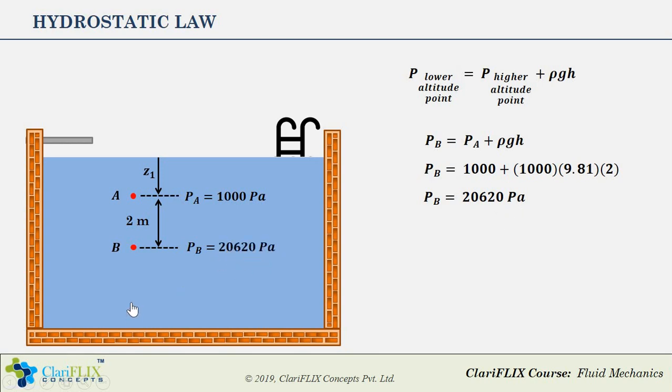At even higher depth, say at point C which is 3 meters down from point B, PC is not known to us. So we can deploy hydrostatic law to figure out pressure at point C. So PC equals PB plus ρgh. PB is 20620 Pascal. ρ is 1000 kg per meter cube. g is 9.81 meter per second square, and h is 3 meters. So PC equals 20620 plus 1000 times 9.81 times 3. And finally the value comes out to be 50050 Pascal.